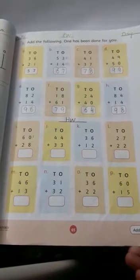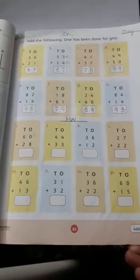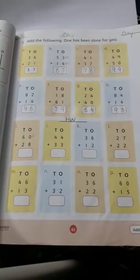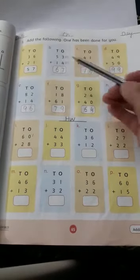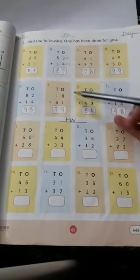You need to solve very carefully. If you find it difficult to add this way, you can use the lines method I explained, drawing lines next to each digit and counting them.